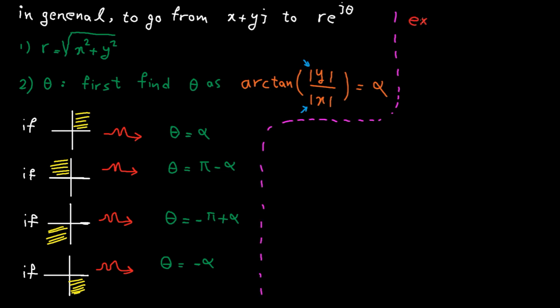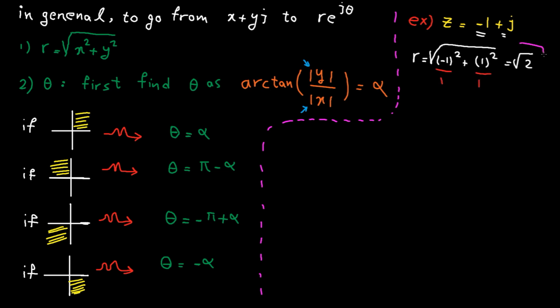First example: this complex number is given and the question is what is the polar representation? This is x or the real part and this is y or the imaginary part. The radius is the square root of x squared plus y squared, so we get square root of 2. To find the angle, first ignore the signs and calculate alpha: arctangent of 1 divided by 1, so alpha is pi divided by 4.